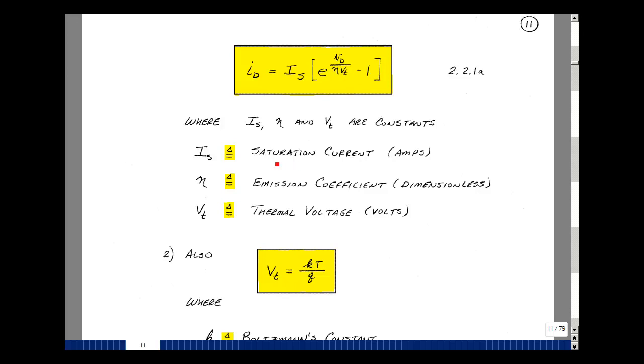Where I_s is called the saturation current, it has units of amps. Eta is called the emission coefficient and is dimensionless, and V_t is called the thermal voltage, and the units on that are volts. The units of volts here and the units of volts here cancel, so we have e raised to a dimensionless quantity, and so I_d is equal to something in amps, although this is a very small number.